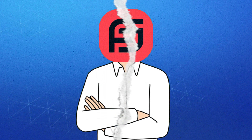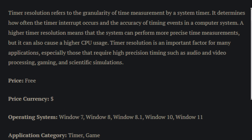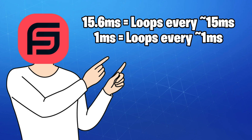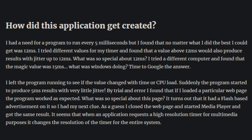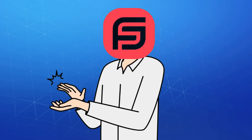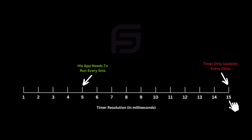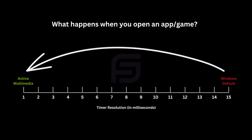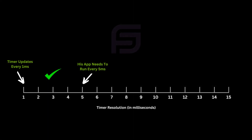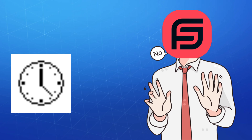But what is timer resolution? Well, in short, it defines the frequency of timer interrupts and the accuracy of timing events within a computer system. And unsurprisingly, a lower timer resolution allows for more precise time measurements, which is actually the reason why Lucas Hale created the app in the first place. To help you visualize his problem that gave birth to timer resolution, I made a little diagram for you. Basically, he needed his app to run every 5 milliseconds, but it was held back by the system timer, which was updating every 15 milliseconds instead. He noticed opening the media player instantly made the timer update more frequently, which in turn allowed his program to run as intended. And since he realized that process was too tedious and inconvenient, the timer resolution app was born.